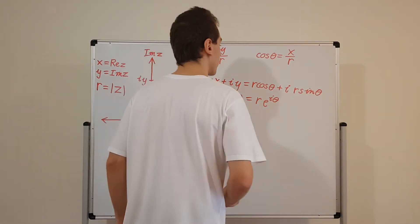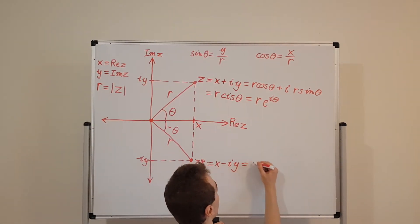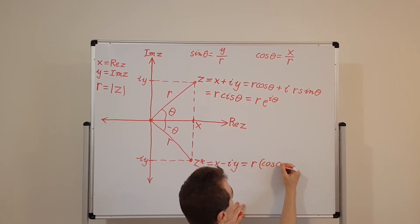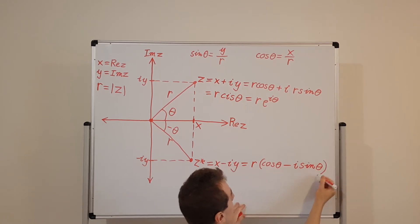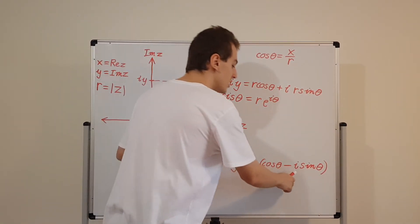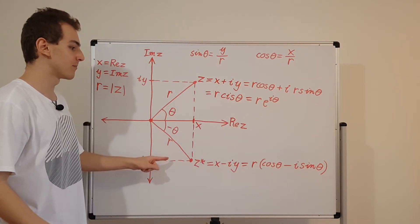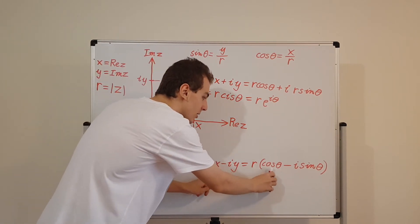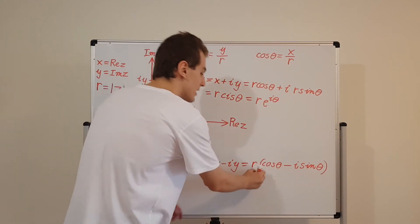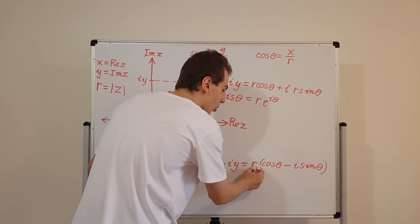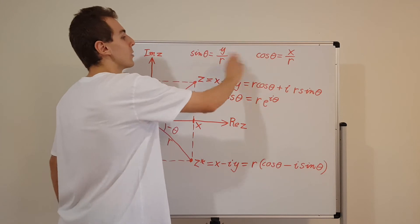So this is the polar form. Now what is that going to look like for the complex conjugate? For z star, we're going to have r times cosine theta minus i sine theta. I've factored out r, and the i has become minus i because I've taken the complex conjugate. x is r cosine theta and minus y is minus r sine theta, so we can redistribute that r.